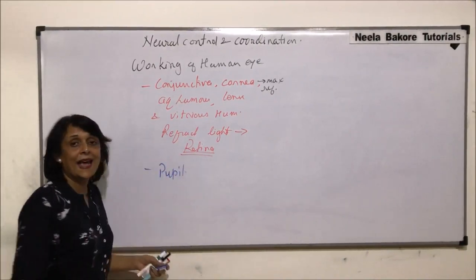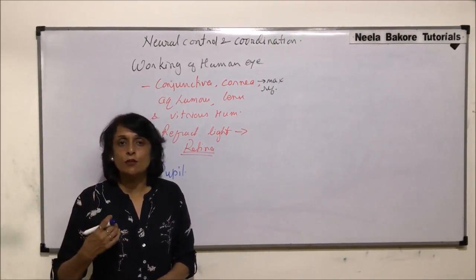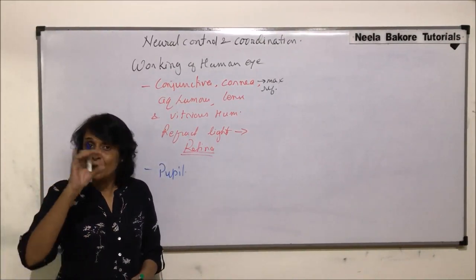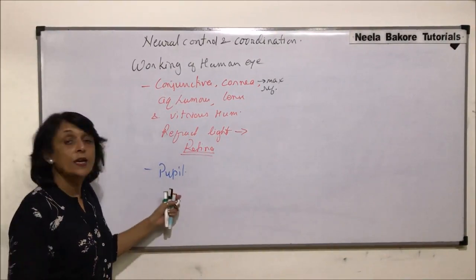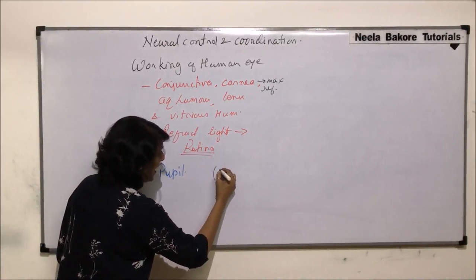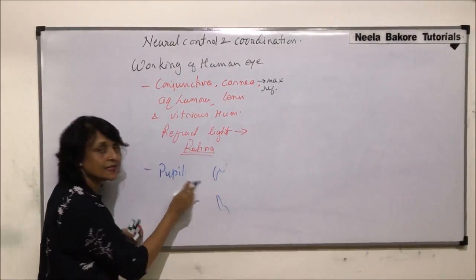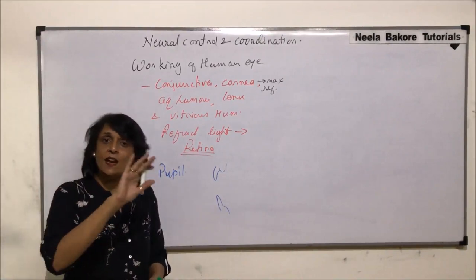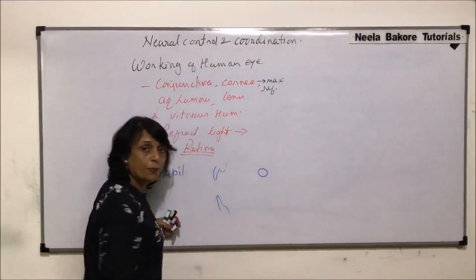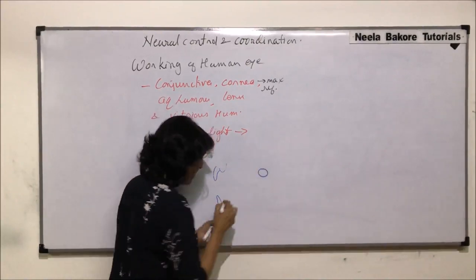The pupil is the space in between the iris part. If we look at this structure, the iris part and the ciliary body are here, and this opening — this gap — is the pupil. If we see it from the front, it appears like a circular opening. Within the iris, there are two types of muscles.